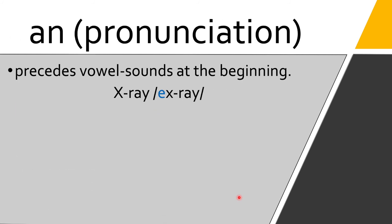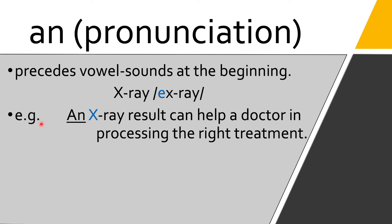'An' is also used when it precedes vowel sounds at the beginning of a word. For example, 'x-ray' starts with the consonant letter X, however the sound is like beginning with the vowel letter E. So we say: 'An x-ray result can help a doctor in processing the right treatment.' We're not going to say 'a x-ray result.' We use 'an' because, though it's consonant letter X, the sound is the vowel E.